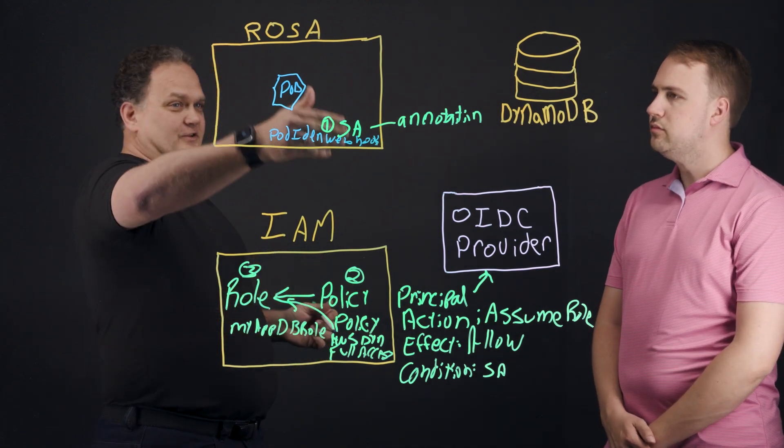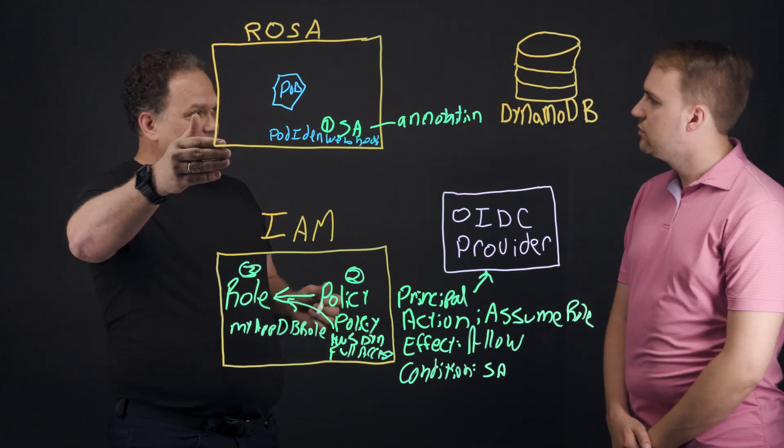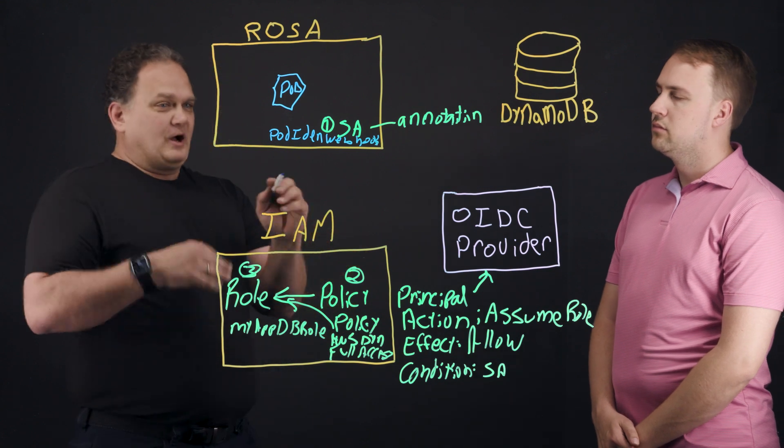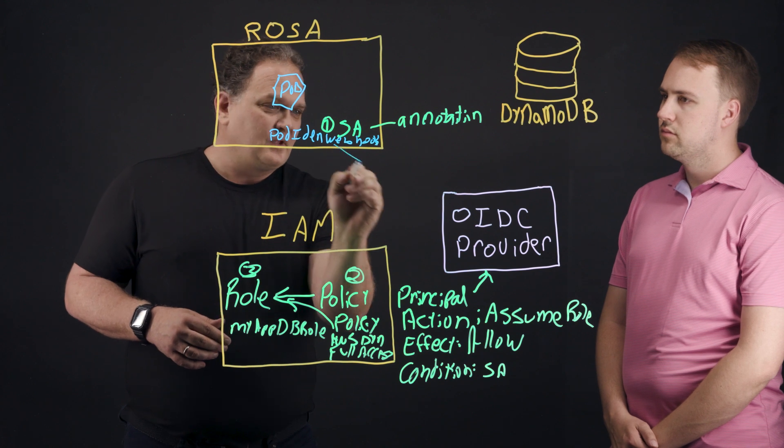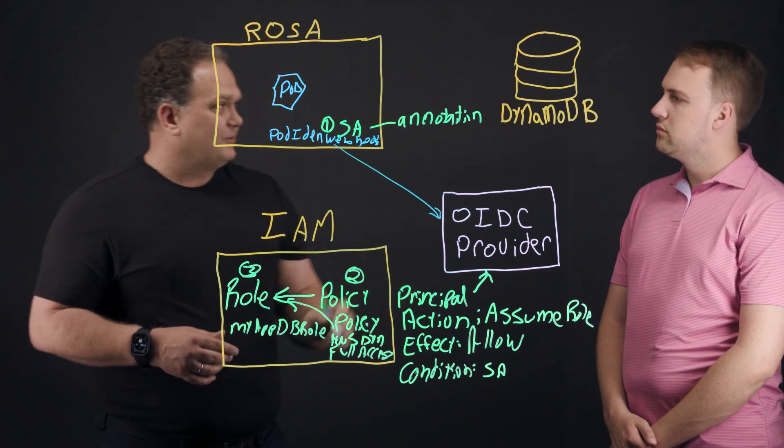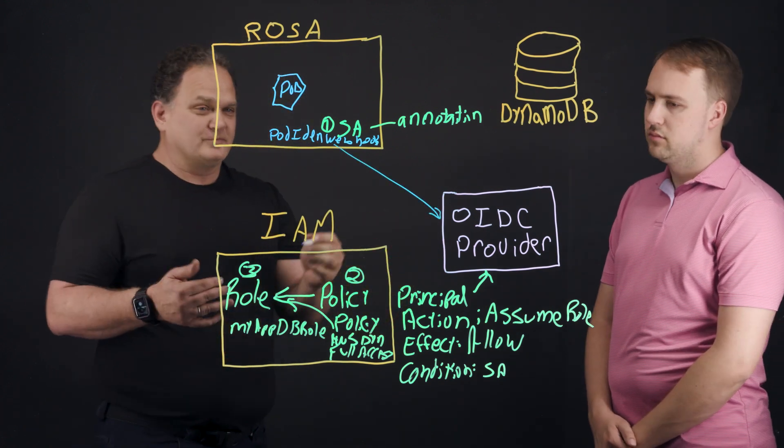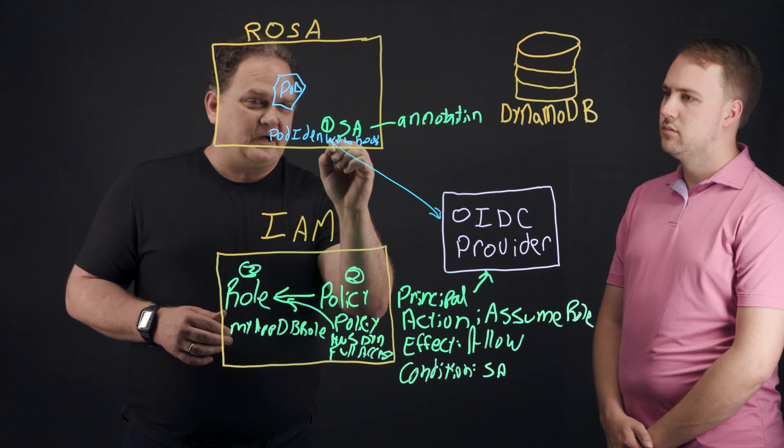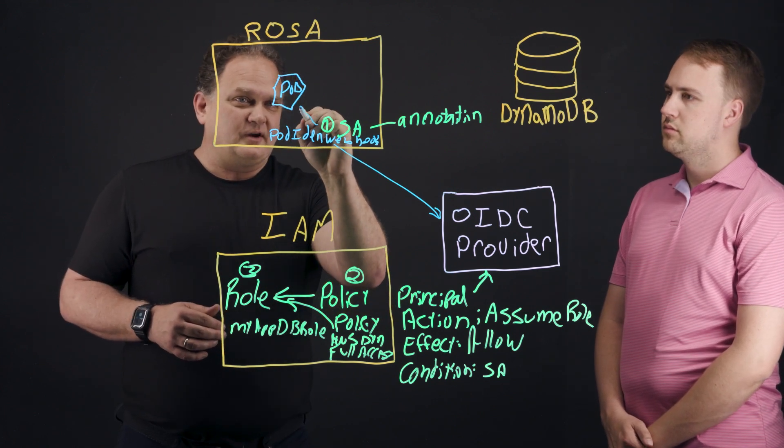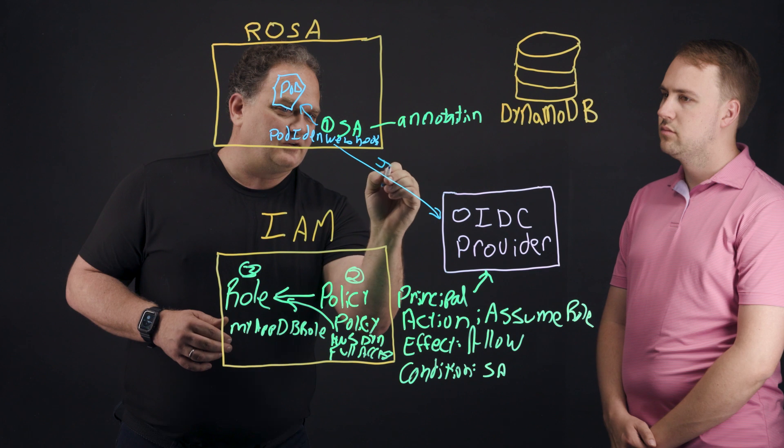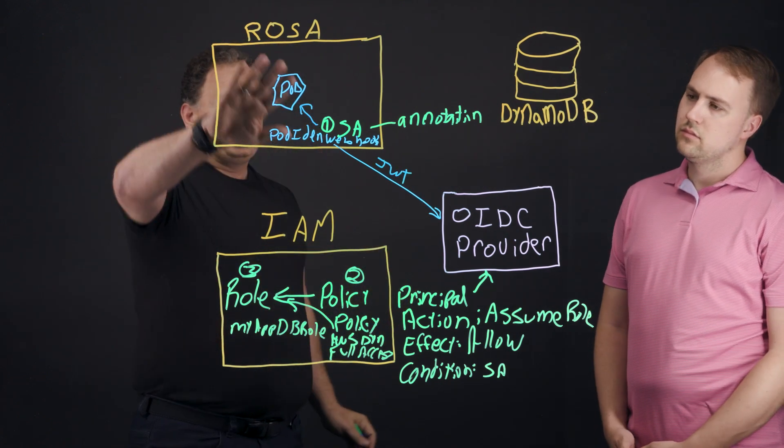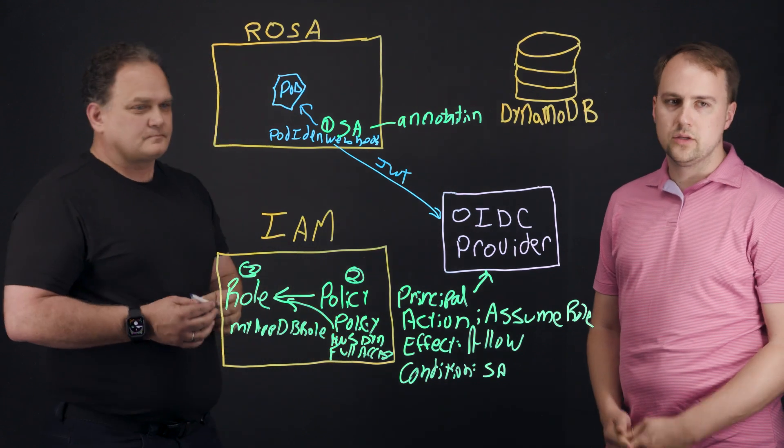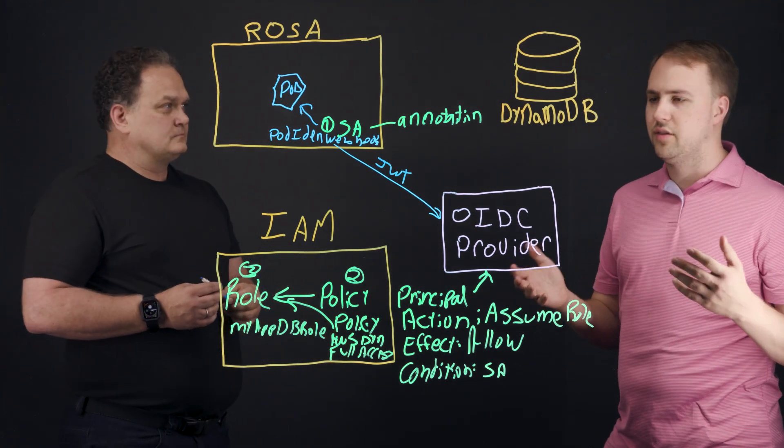So when the pod starts, it says, hey, there's an annotation on the service account. I need to go to the provider that's in the annotation, which is the OIDC provider. And I need to get a token because I know I'm going to be requested later to perform some action. So the pod identity webhook returns that there. And this is a JSON web token. So the OIDC provider provides that token, stores it in the pod. Awesome. So once we do all of that, right,